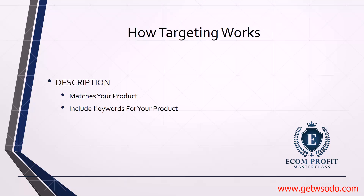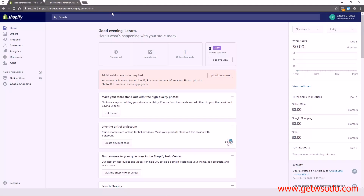The second way targeting works with Google Shopping ads is with the description. We want the description to match your products, and we want to include keywords for your product in the description. The last way targeting works is with tags — we want to make sure tags match our products and include keywords for your products inside your tags.